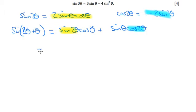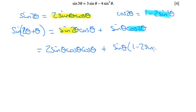So we will get 2 sine theta cos theta cos theta plus sine theta times 1 minus 2 sine squared theta. So I've got a cos 2 theta. I've got a cos squared theta there.